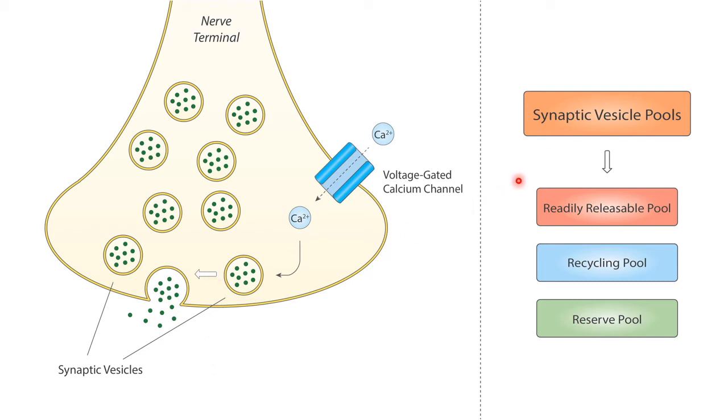Nevertheless, not all synaptic vesicles are the same, meaning they don't always possess the same origin or probability of being released. Actually, in most known synapses there are three different pools, different groups of synaptic vesicles carrying neurotransmitters.